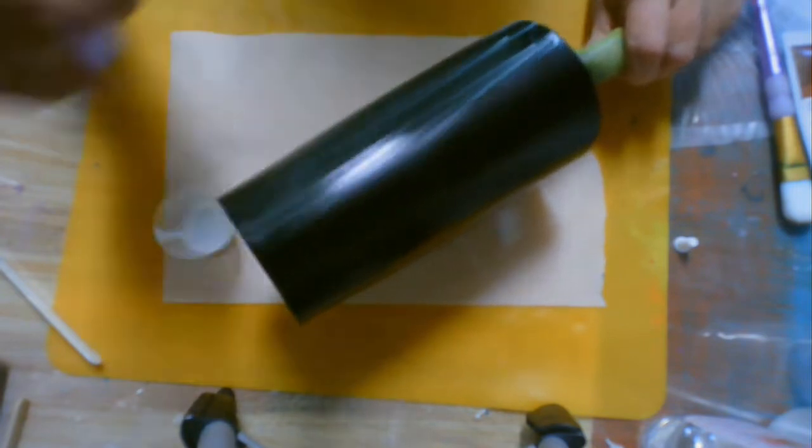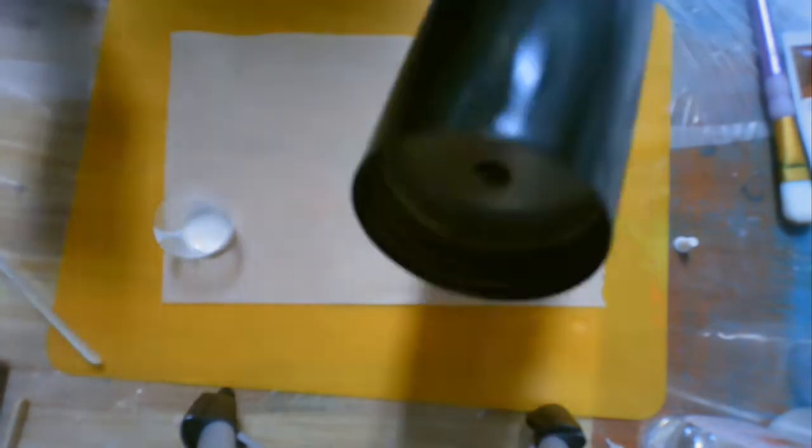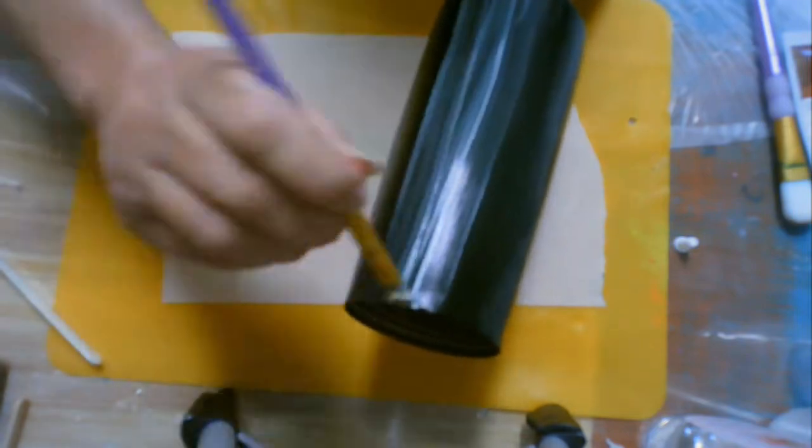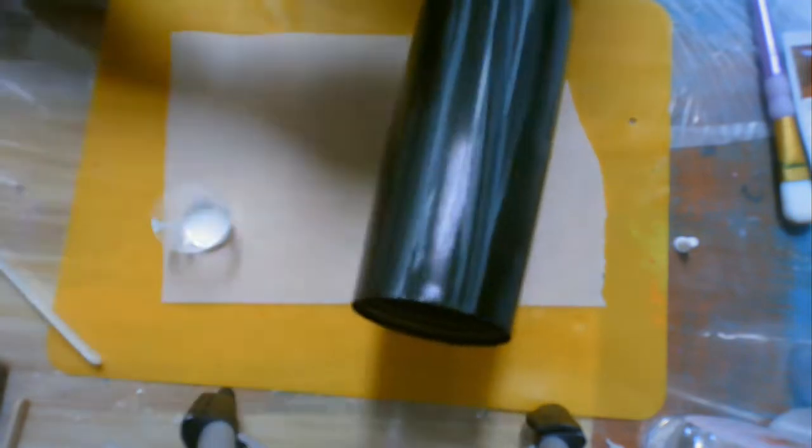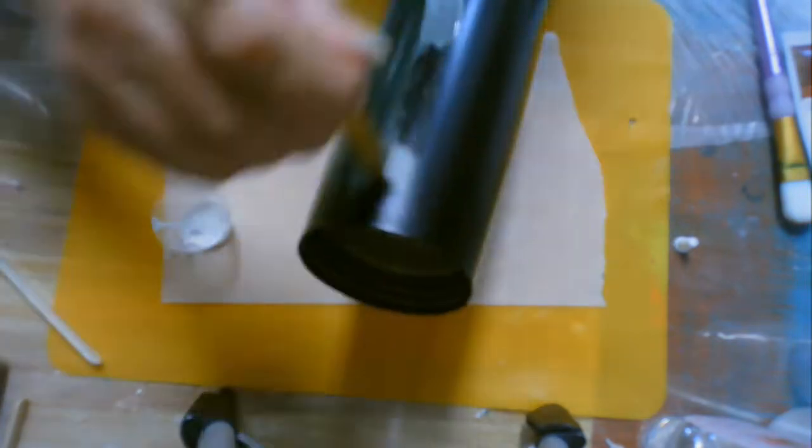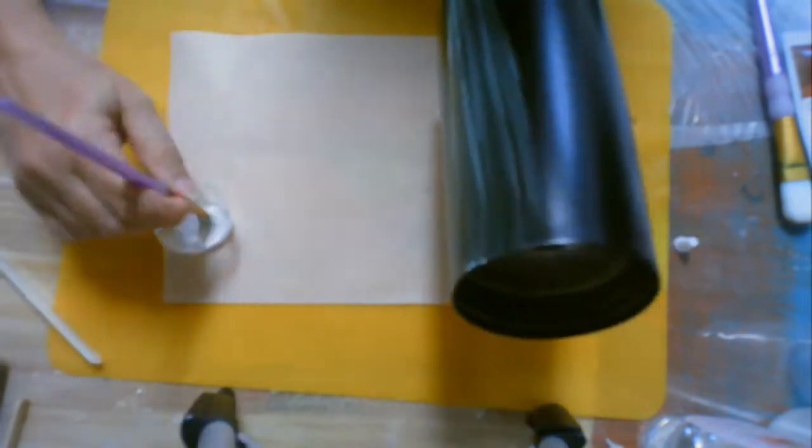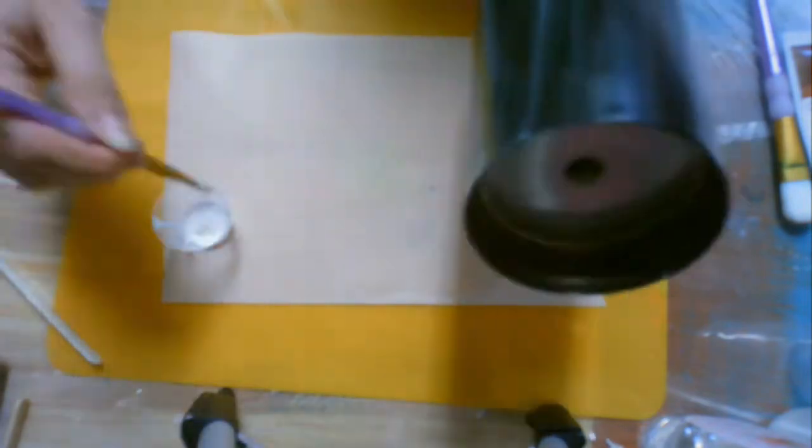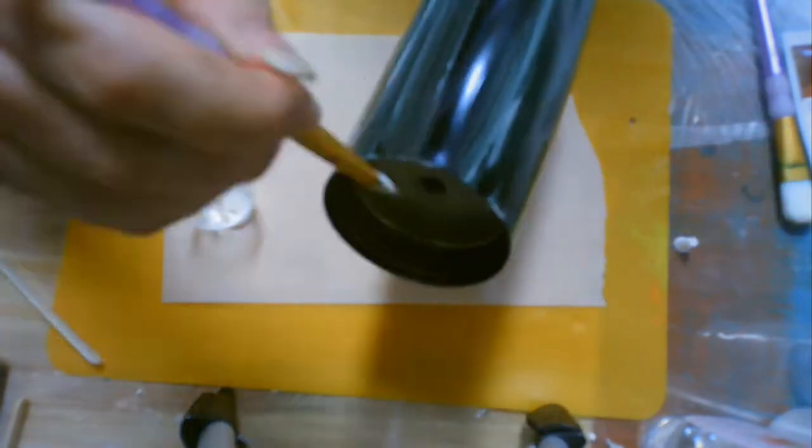So I've already prepped my cup with black spray paint and I am using Eileen's Tack-It over and over, a 1 to 1 ratio with water. And I am brushing it onto the surface of the tumbler and then I'm going back over it until I get a smooth surface.